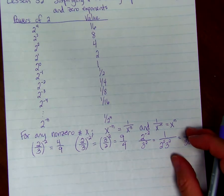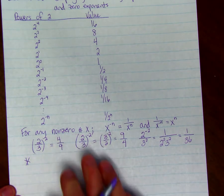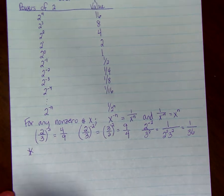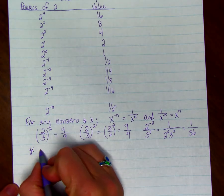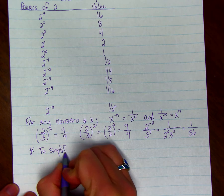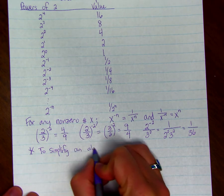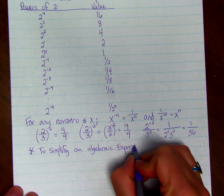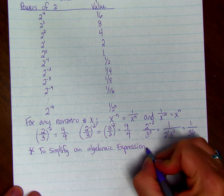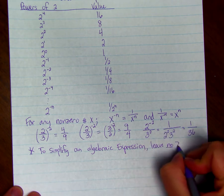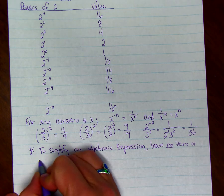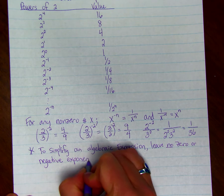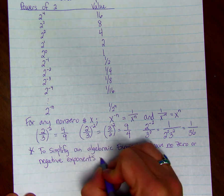So to simplify an algebraic expression, we leave no, we cannot have any zero exponents or negative exponents. And that will make it simplified all the way. To simplify an algebraic expression, leave no zero or negative exponents in the answer.